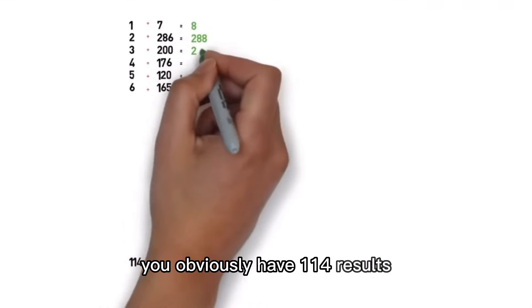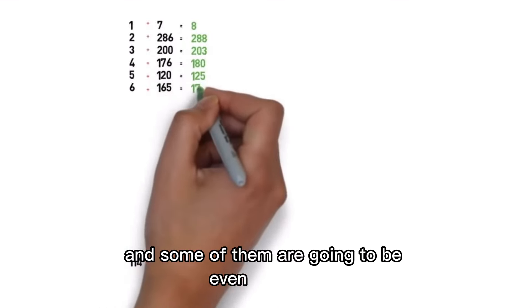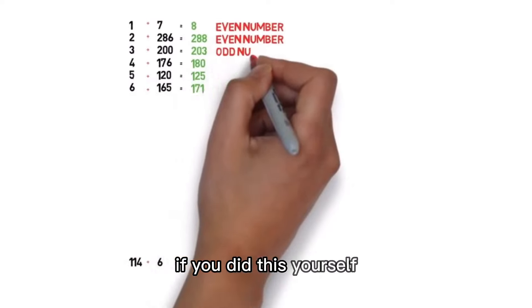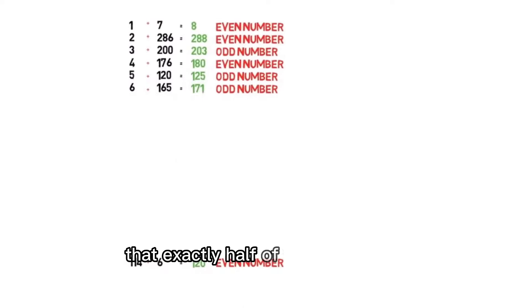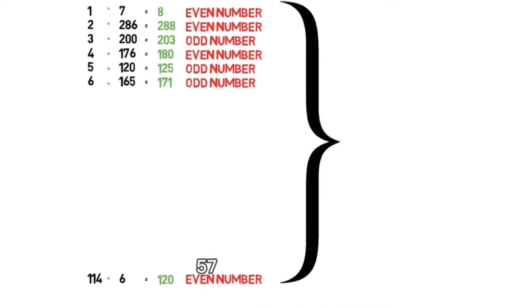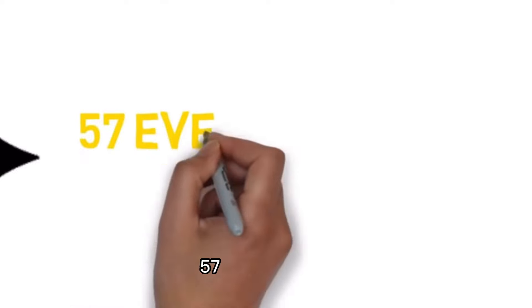If you do this for the entire Quran, you obviously have 114 results. Some of them are going to be even numbers, some of them are going to be odd numbers. If you did this yourself, you will see to your surprise that exactly half of the results are even numbers and half of them are odd numbers: 57 even numbers, 57 odd numbers.